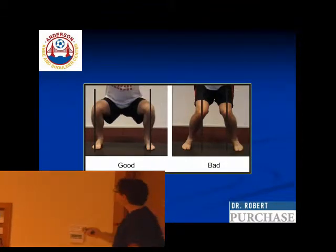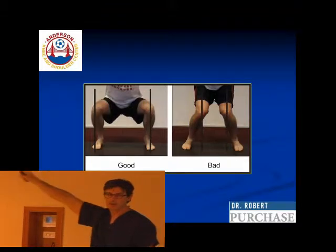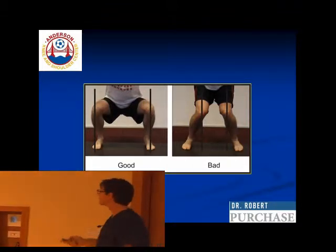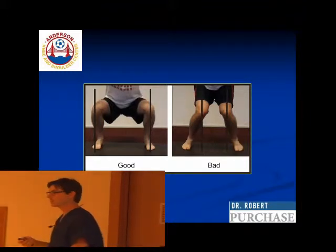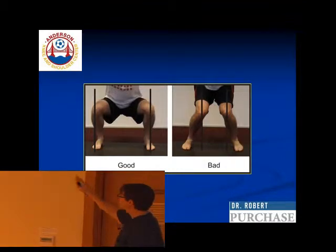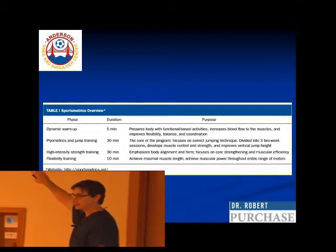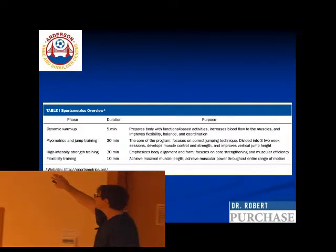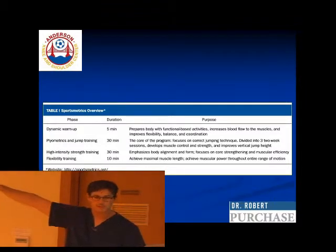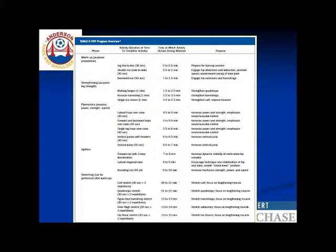Good landing involves a different muscle pattern firing and different muscle recruitment. You've got to support it with a strength and endurance program. This is a four-stage program involving a warm-up, plyometrics and jump training — more on how to jump correctly — then high-intensity strength training for better strength and endurance, and then a flexibility component. If anybody wants, I can send this to you.